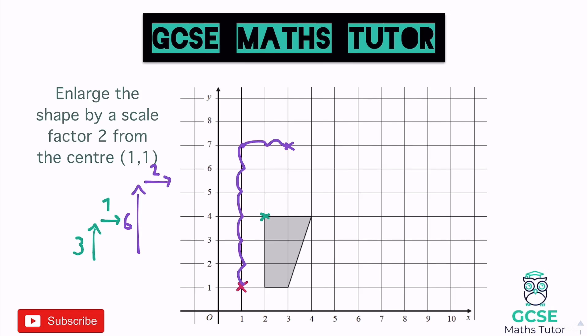We could do this with all the other points, but once I've done that first point and I'm happy with where it's positioned, I can get away without doing the others. All I'm going to do is draw the shape in twice as big from that point. The only thing to be careful of is that we identified this specific point, so we redraw the shape from that one point only.